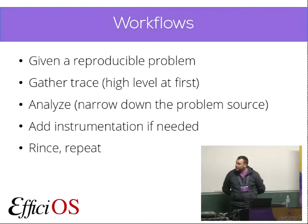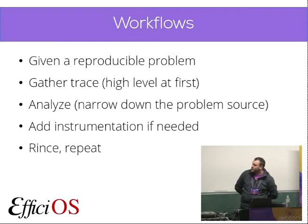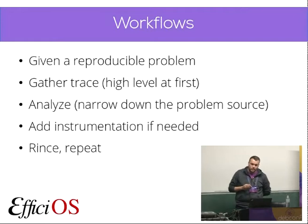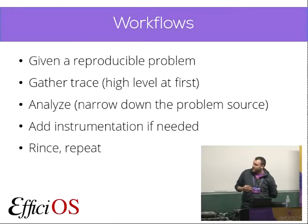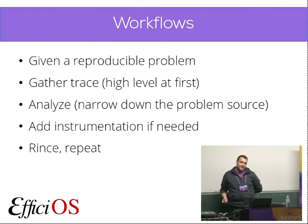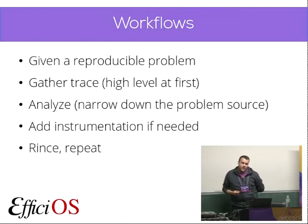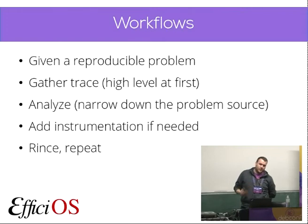The main workflow with tracing is: given a reproducible problem, gather the trace, and then using the tools mentioned, pinpoint a specific moment in the trace where you see something interesting. When you do tracing, there are so many events in a trace that it's always difficult to find when your problem is occurring because of the overload of information. It's easier to start with enabling only certain events, and then as you progress in your debugging session, add other trace points you've identified as interesting.